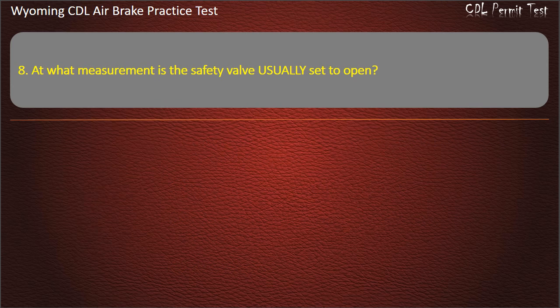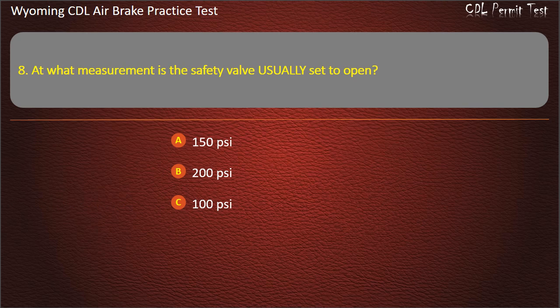Question 8. At what measurement is the safety valve usually set to open? 150 pounds per square inch. 200 pounds per square inch. 100 pounds per square inch. 250 pounds per square inch.